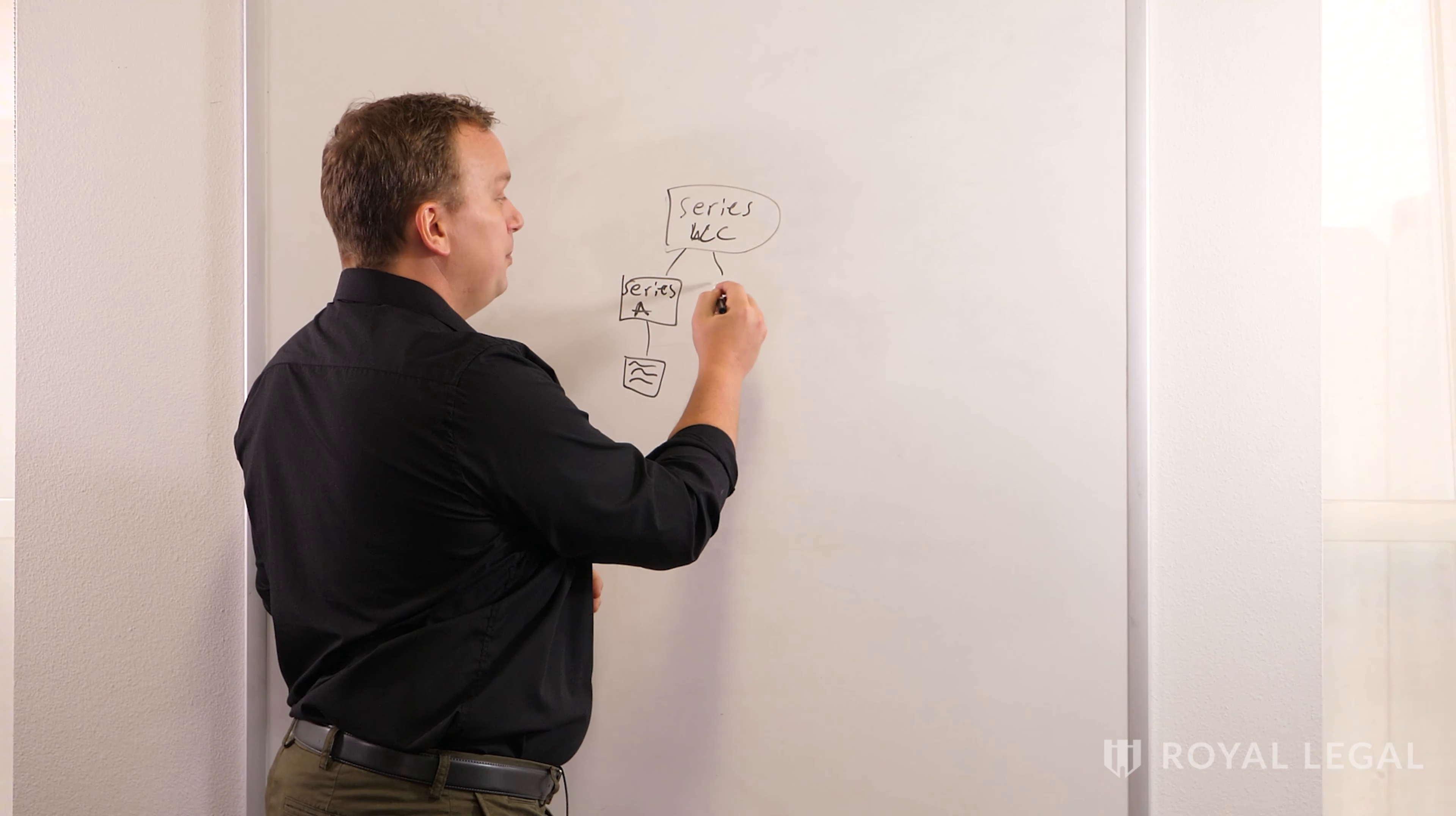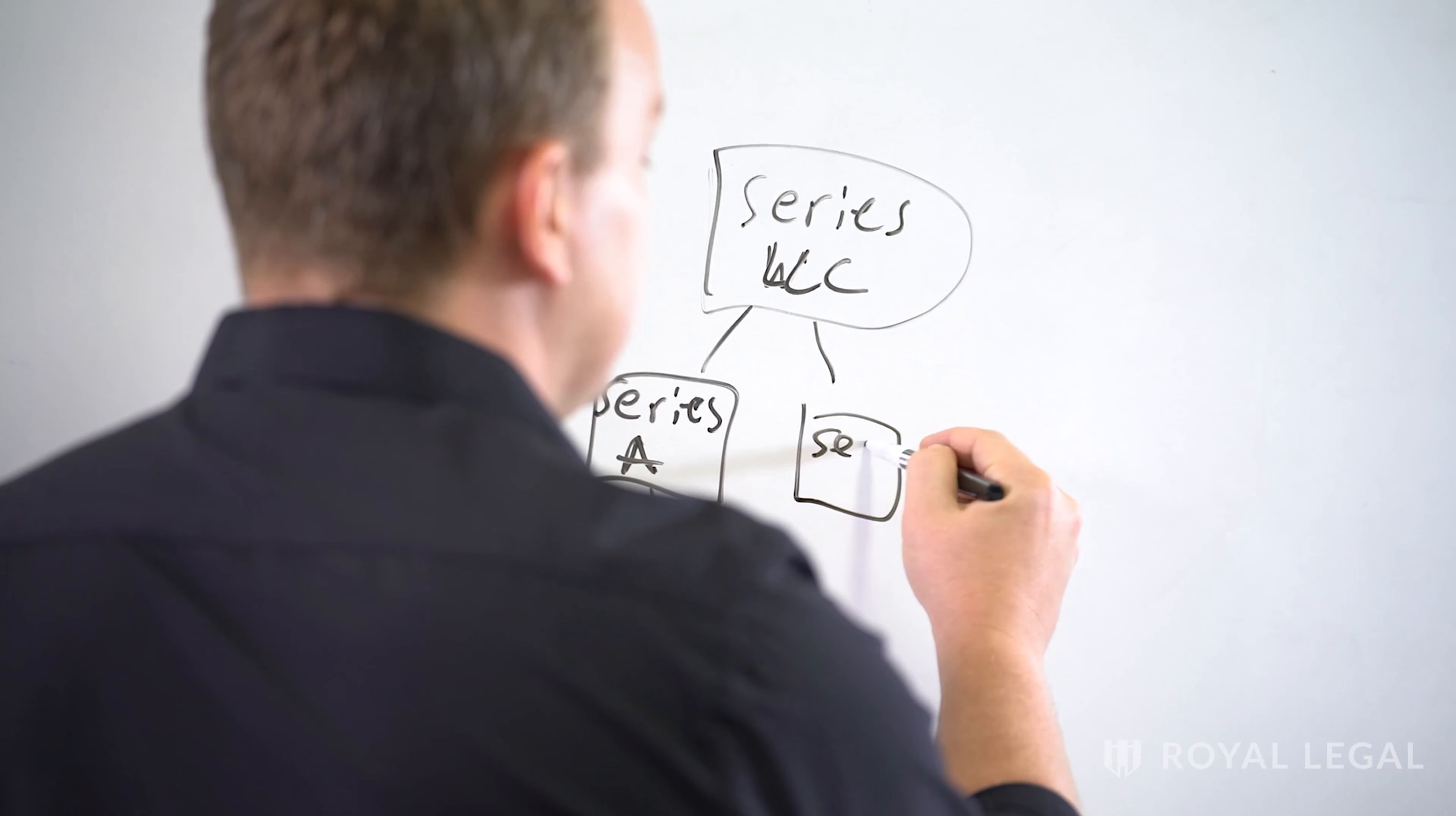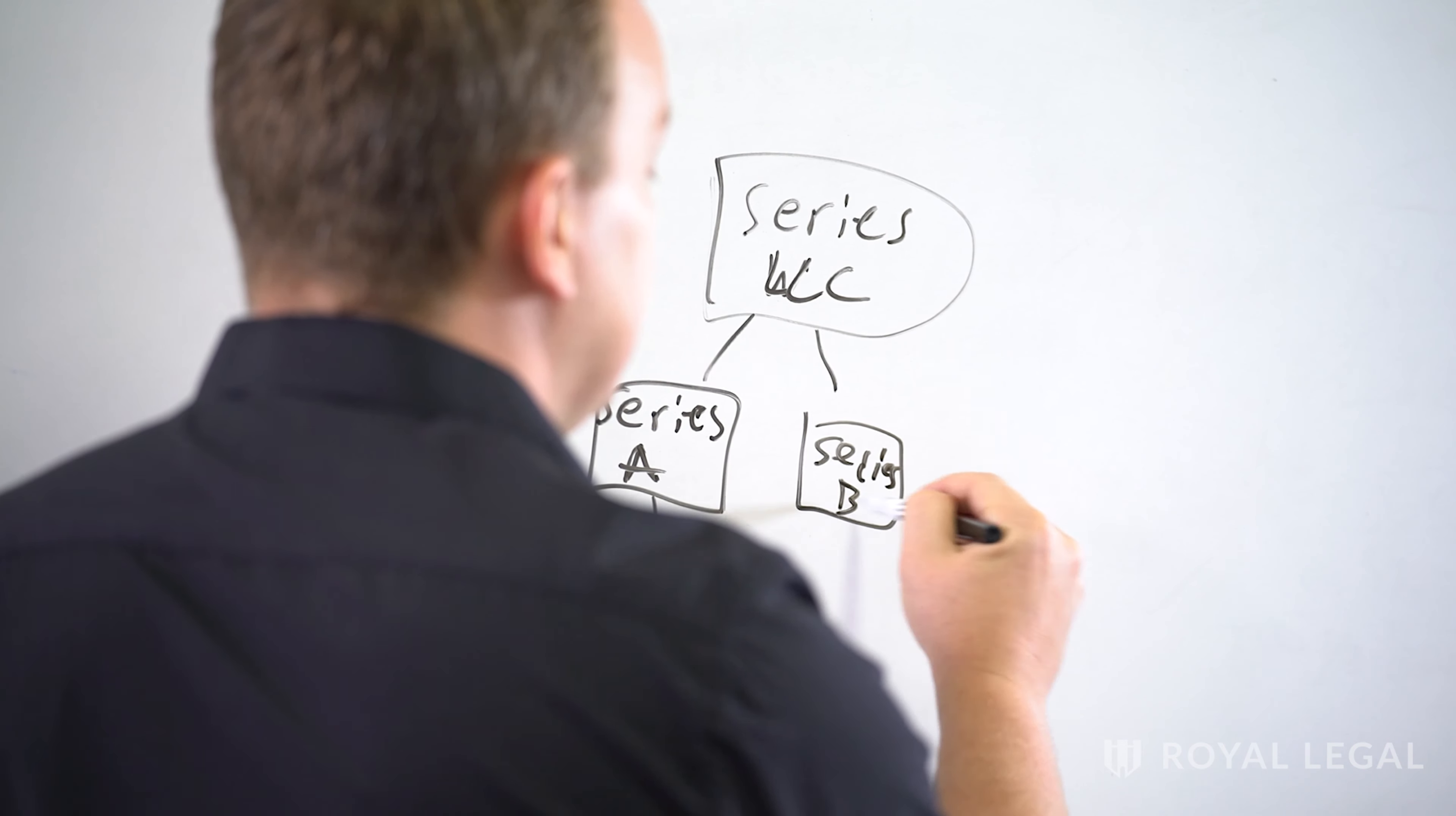Now, why would you do it this way? Well, because when you have your series A and series B, C, D, etc., and all of these have their own loans attached to them, if anything goes wrong with this loan, you're only exposed to the extent of this loan.